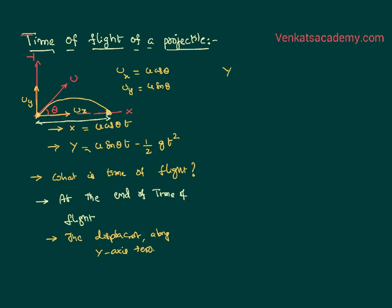We have just now written equation for the vertical displacement, y as u sin theta into t minus half gt square. If I say the time taken for the displacement along y-axis is nothing but time of flight. Let me call the time of flight T, capital T. I would like to say displacement is zero at the end of the time of flight.